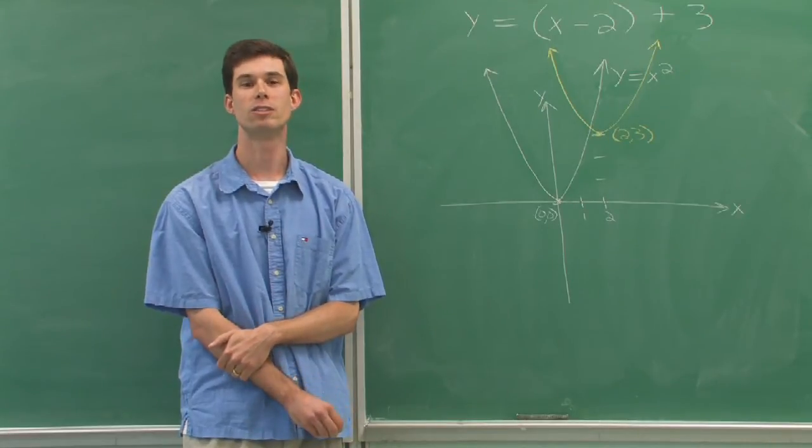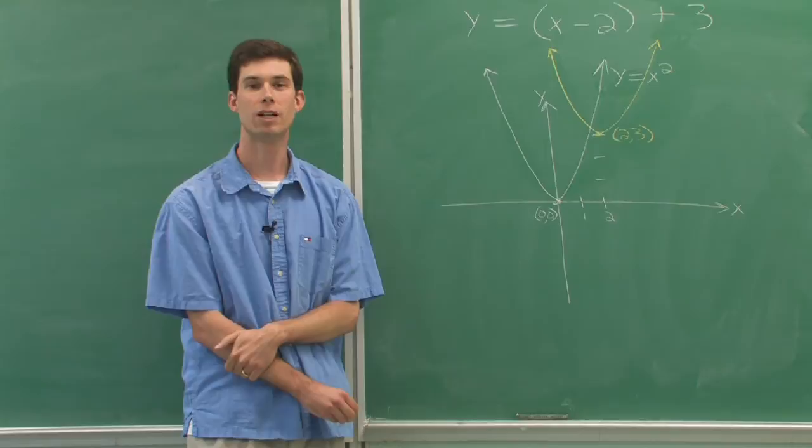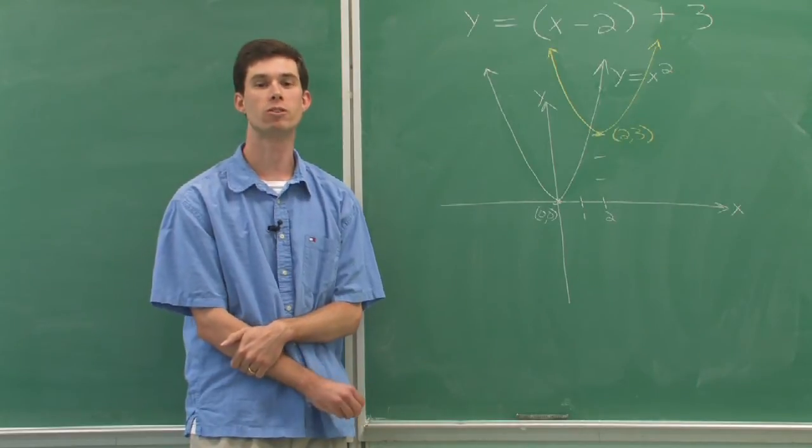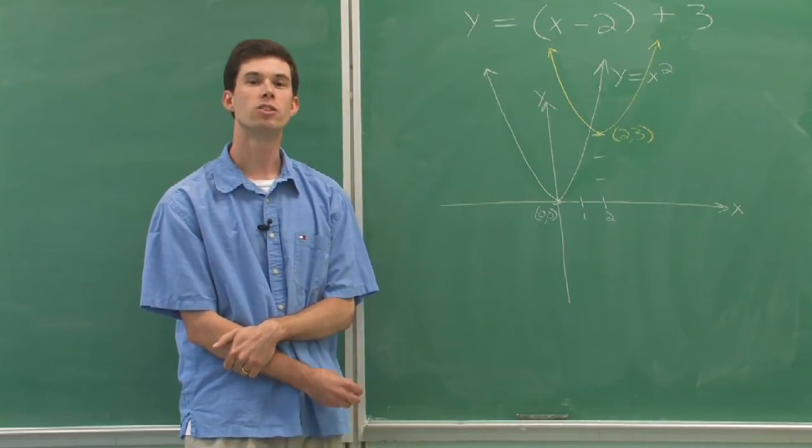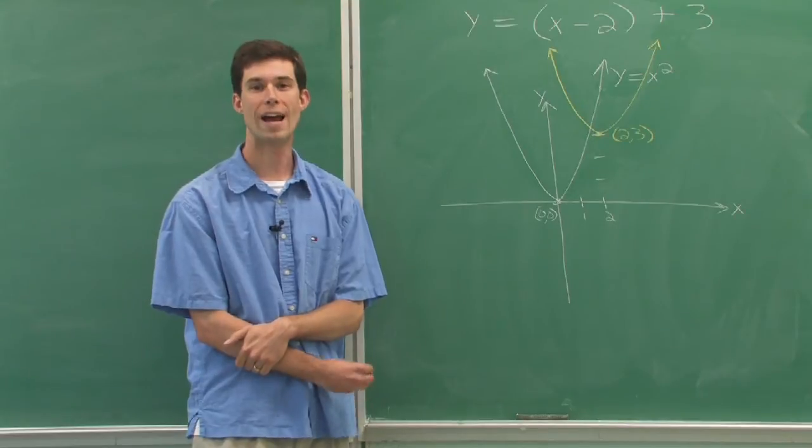And it's kind of the opposite of what you would normally think. We normally think that subtraction makes things go left. But when we're talking about translations, a horizontal translation is sort of backwards. So instead of going left, we're going to go right 2.